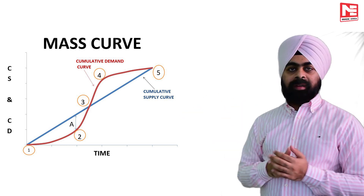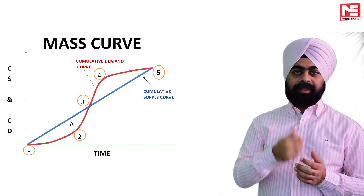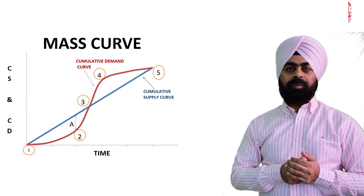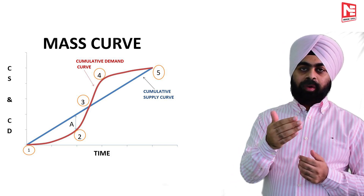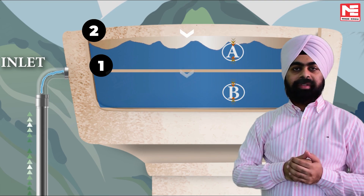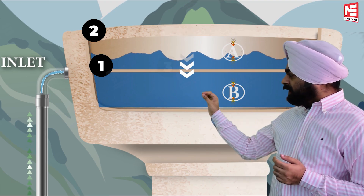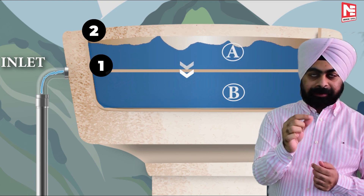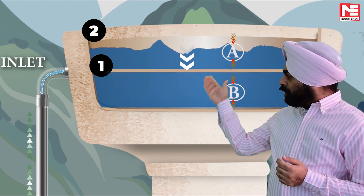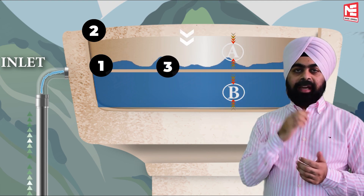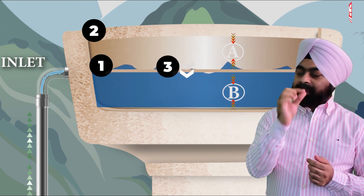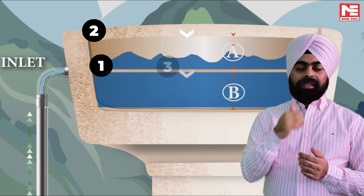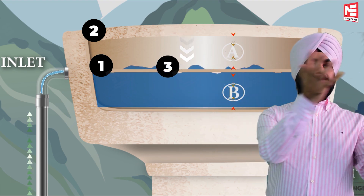Beyond 0.2, the rate of demand becomes more than the rate of supply, because the slope of the cumulative demand curve is more than the slope of the cumulative supply curve. Water level starts decreasing from 0.2 to 0.3. At point 0.3, both curves are meeting each other, meaning the cumulative supply will be equal to cumulative demand. The water level in the reservoir at 0.3 will be the same as it was at the start of the analysis.